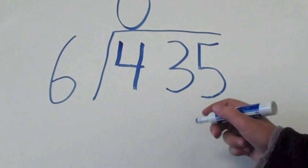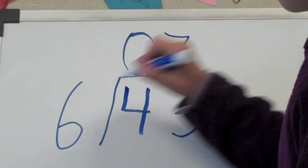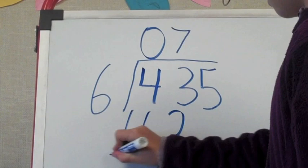With 1 left over, put the 7 over the 3 and do 7 times 6, which is 42. Fourth, put the 42 under the 43 and subtract. That leaves 1. Put that 1 under the 42 and bring down the 5.